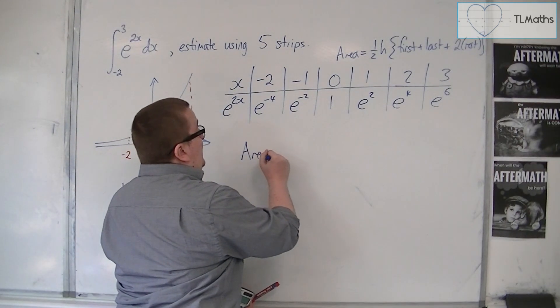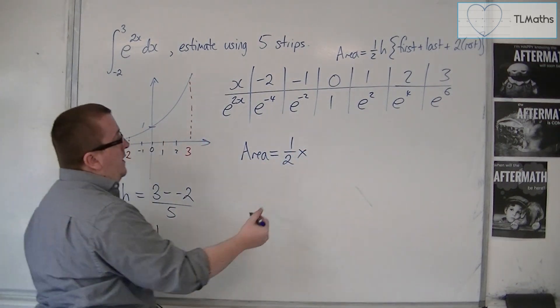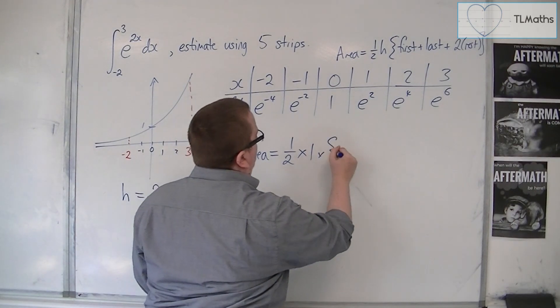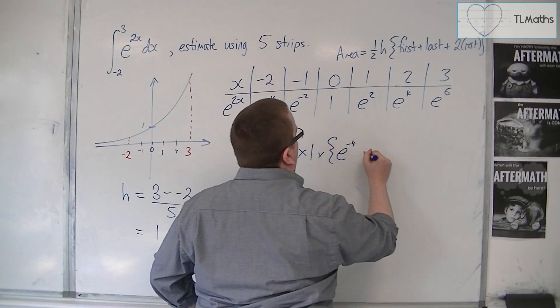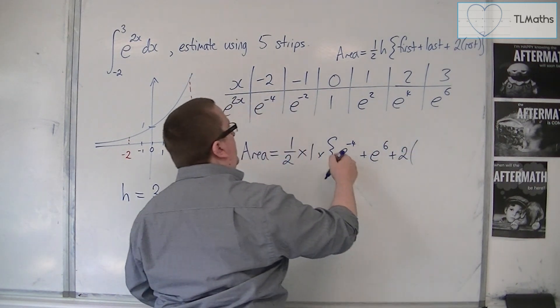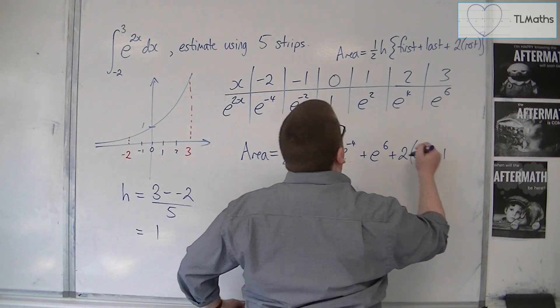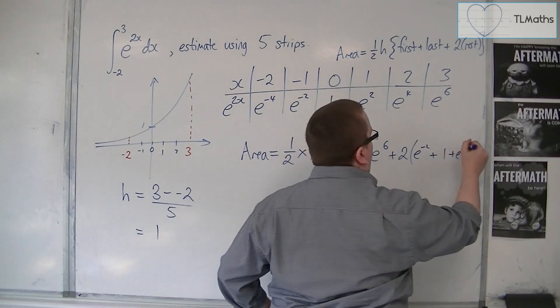It's easier then to substitute them straight in. Because we've got 1 half times h, so 1 times the first, which is e to the minus 4, plus the last, which is e to the 6, plus 2 lots of the rest. So e to the minus 2, plus 1, plus e to the 2, plus e to the 4.